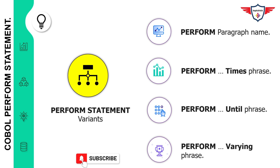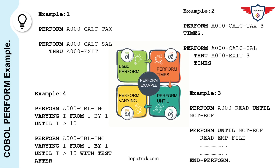Now let's look at examples for each format. The first example is the basic PERFORM statement with a paragraph name. Here I have used two PERFORM statements. The first executes a paragraph named A000-CALC-TAX, so whatever statements are in that paragraph will be executed. Similarly, if you have a section, you can use PERFORM followed by the first paragraph of that section, then THROUGH followed by the last paragraph of that section, to execute the sequence of paragraphs within that section.